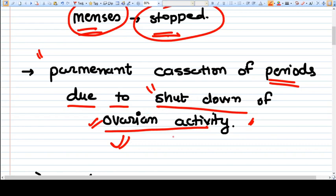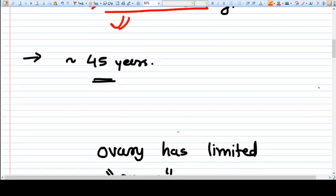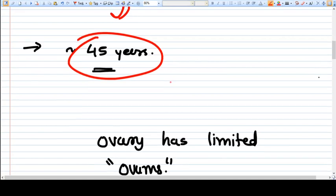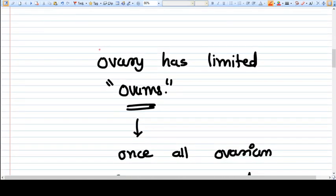You need to understand very well that when we talk about menopause, we are talking about shutdown of ovarian activity and not just only cessation of the periods. You will understand this concept later. It happens on an average at 45 years.